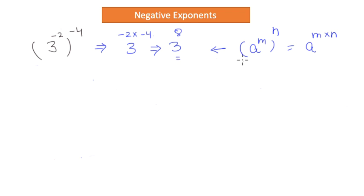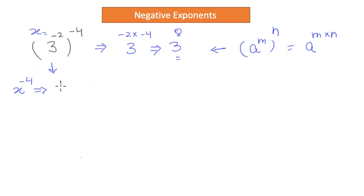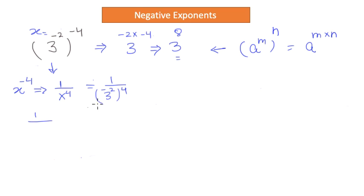We got the result, but let us prove this through a number of steps. If I replace 3 to the power negative 2 with x, then I can rewrite this whole expression as x to the power negative 4. In other words, this is equal to 1 over x to the power 4. Now let us put x back in the expression — that gives 1 over the quantity 3 to the power negative 2, raised to the power 4. Taking one more step, 3 to the power negative 2 can be written as 1 over 3 to the power 2, and that has a power of 4.